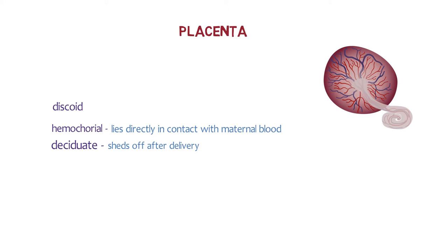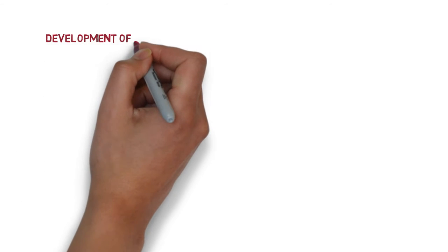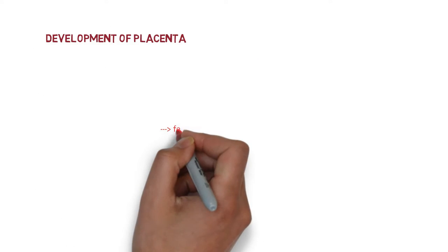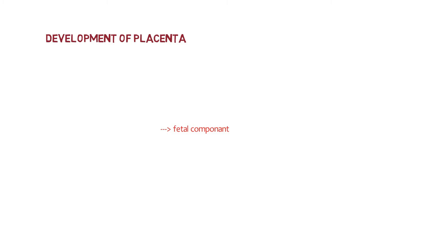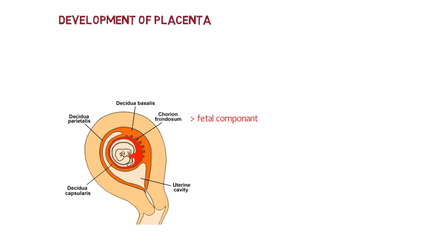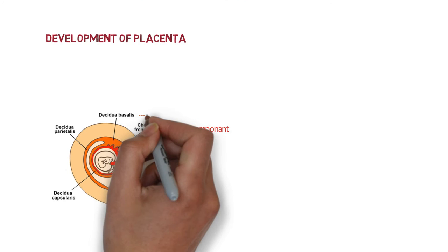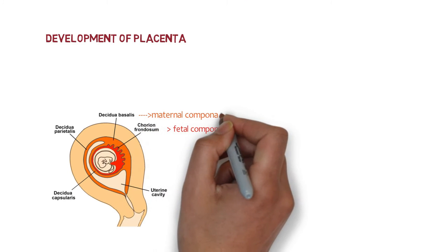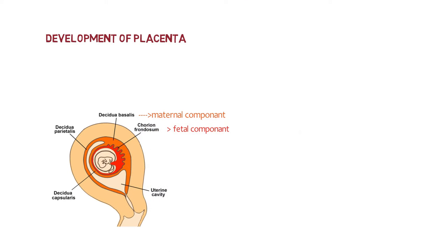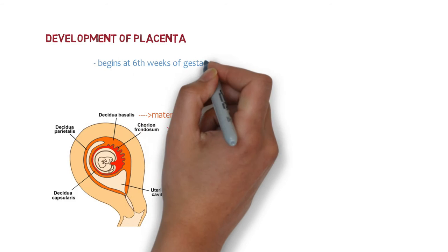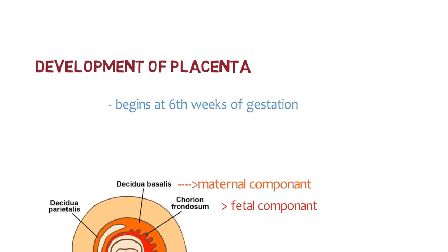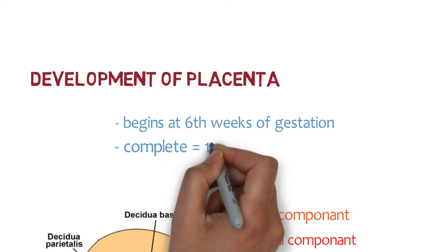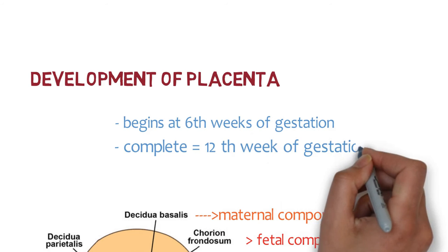Let's begin from the very basics — the development of placenta. The placenta develops from two sources, principally fetal and maternal. Chorion frondosum is the fetal component while decidua basalis is the maternal component. It begins at the 6th week and is completed by the 12th week of gestation.